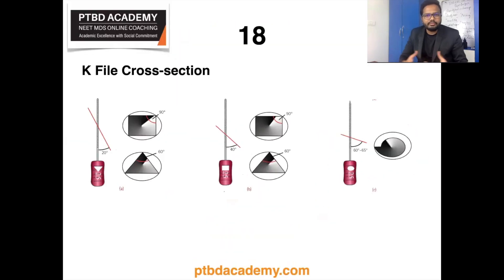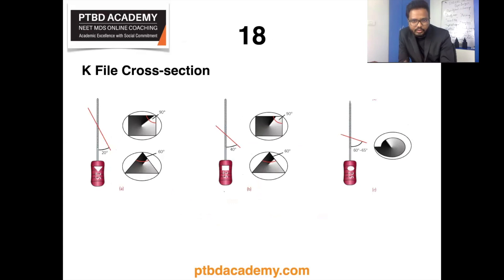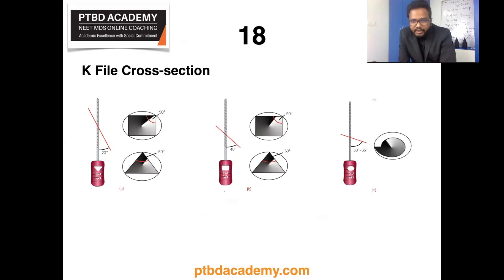There seems to be a question on K-file cross-section. You can find different file orientations and their cross-sections: K-file, K-reamer, and H-file from left to right. These endodontic instruments are basically used for cleaning and shaping. The K-file, represented by A, is traditionally made from a square blank. The K-reamer, B, is traditionally made from a triangular blank. And the H-file, C, on the extreme right, is made from a circular blank — machined from a round blank to produce spiral flutes.